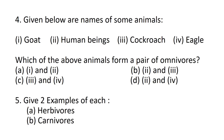Question number 4: Given below are names of some animals. Number 1: Goat. Number 2: Human beings. Number 3: Cockroach. Number 4: Eagle. Which of the above animals form a pair of omnivores? Option A: one and two. Option B: two and three. Option C: three and four. Option D: two and four.